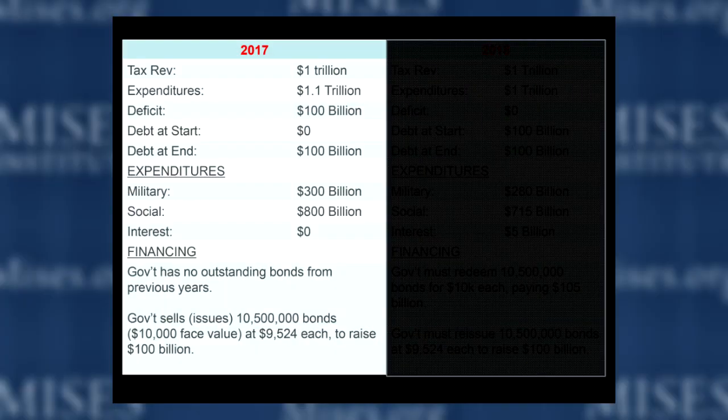What we're going to walk through is two hypothetical years for a government, just going through its finances. I want you to see exactly the sense in which running a deficit makes it harder in the future for the government to buy things. It's the same thing as it is for a household, but let me do it in the context of a government so you can make sense of some of the vocabulary used in this context.